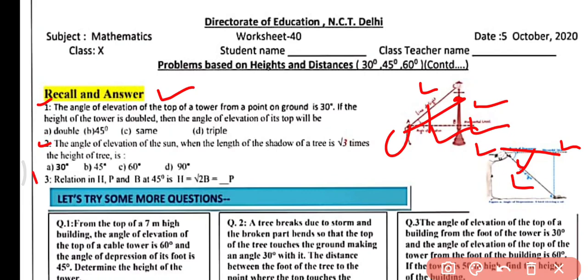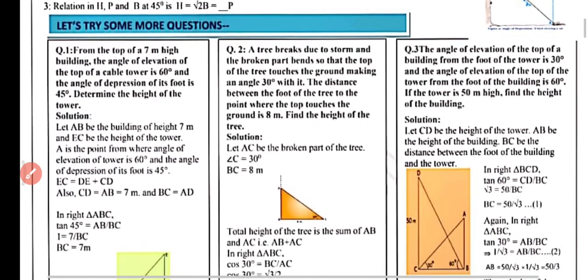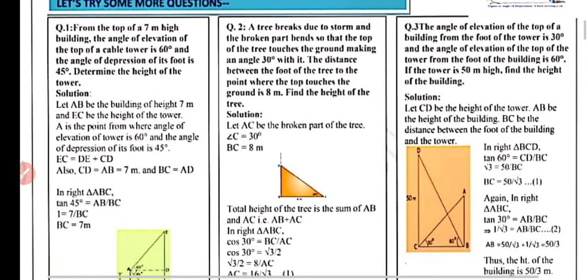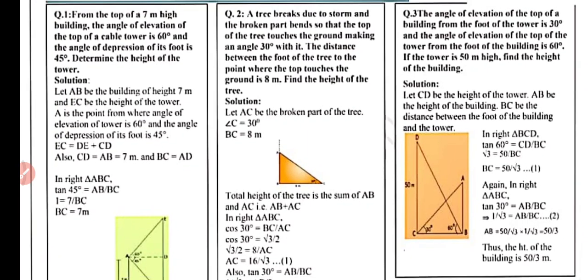Let's try some more questions based on angles 30°, 45°, and 60°. We have three examples. The first one: from the top of a 7-meter high building, the angle of elevation of the top of a cable tower is 60° and the angle of depression of its foot is 45°. Determine the height of the tower.